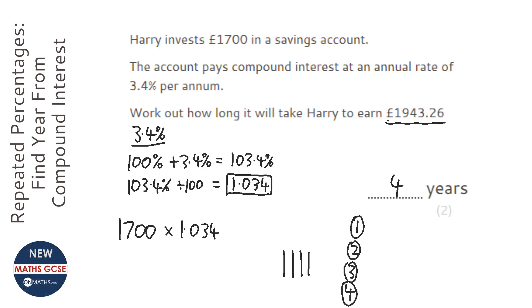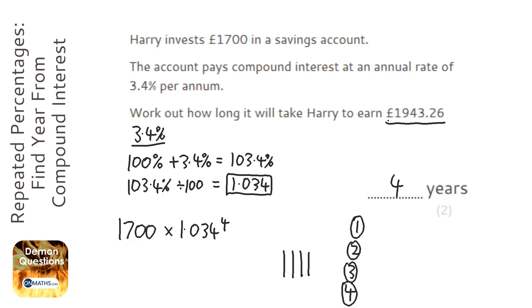You could write down the values after each year, which would probably be sensible, or you could just do 1700 times 1.034 to the power of 4, because we took four years — and that does equal 1943.26.